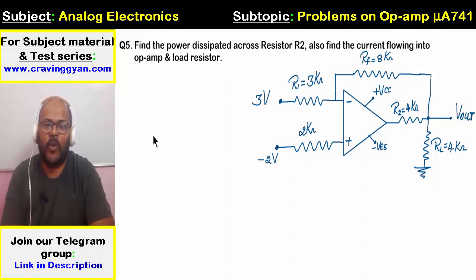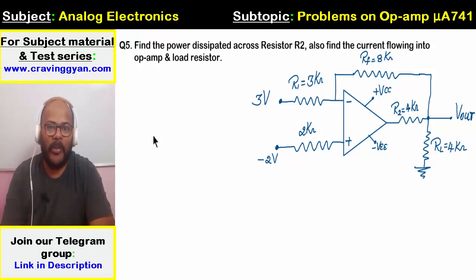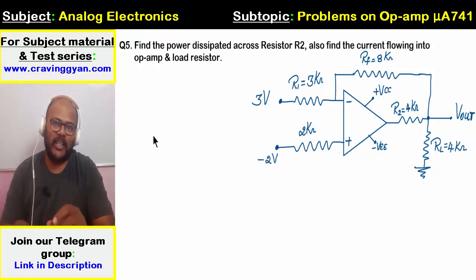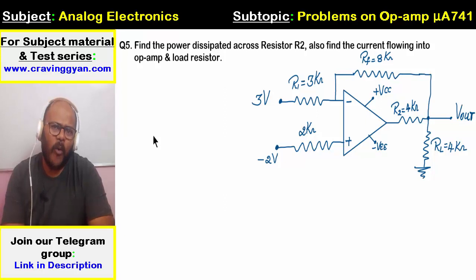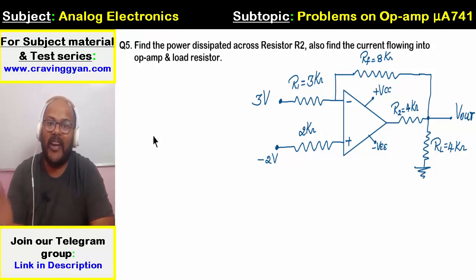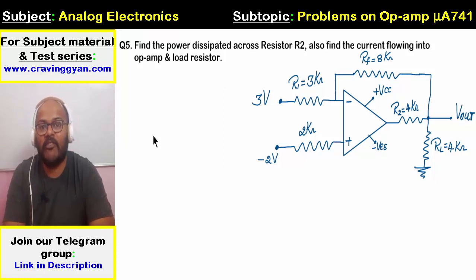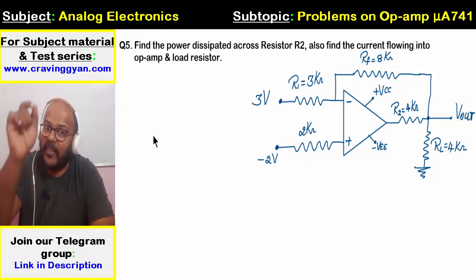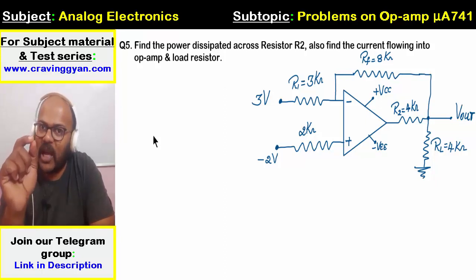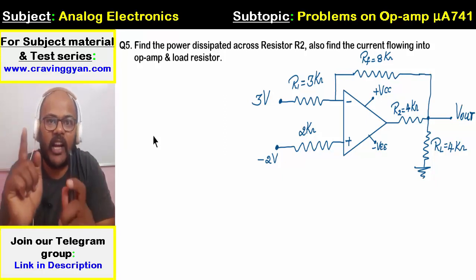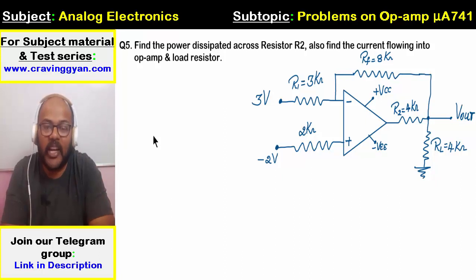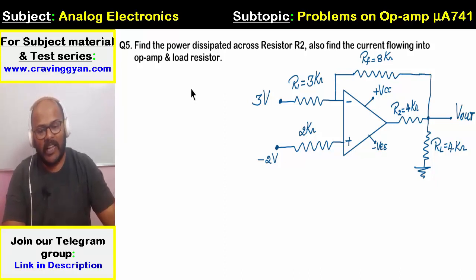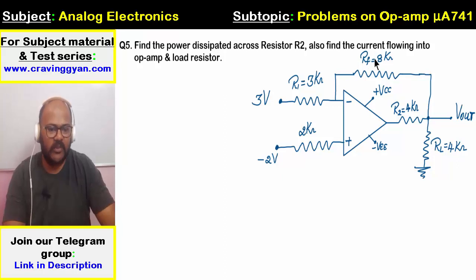Fifth question: find the power dissipated across RL, the current into the op-amp, and the current through load resistor RL. In this question, a resistor R2 is connected between the output of the op-amp and the actual output terminal. The current through the 2 kilo ohm is zero, and the current into the op-amp is zero. The non-inverting potential is minus 2 volts, so the inverting potential is also minus 2 volts.